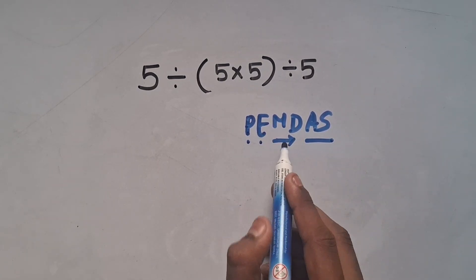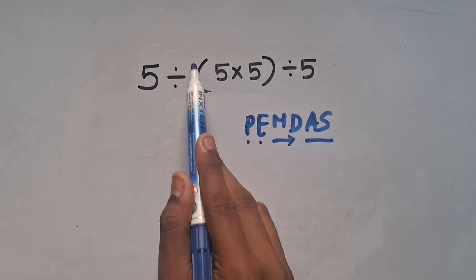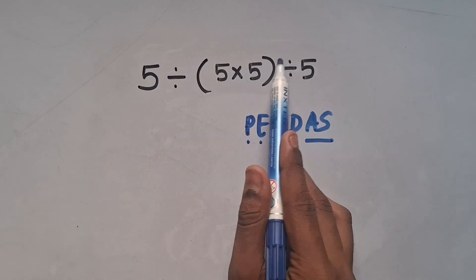According to this rule, first we have to solve the parentheses, then from left to right, solve this division and then this one.